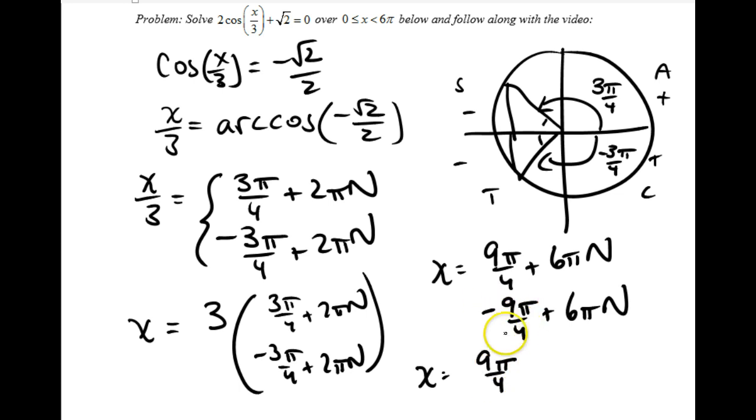My next answer, negative 9 pi over 4 is not within this domain because it's negative. But if I add 6 pi to it, negative 9 pi over 4 plus 6 pi, I'll get my answer. Now I need a common denominator. I'll multiply this by 4 over 4 and I get negative 9 pi over 4 plus 24 pi over 4, which gives me my second answer, which is negative 9 pi plus 24 pi is 15 pi over 4.